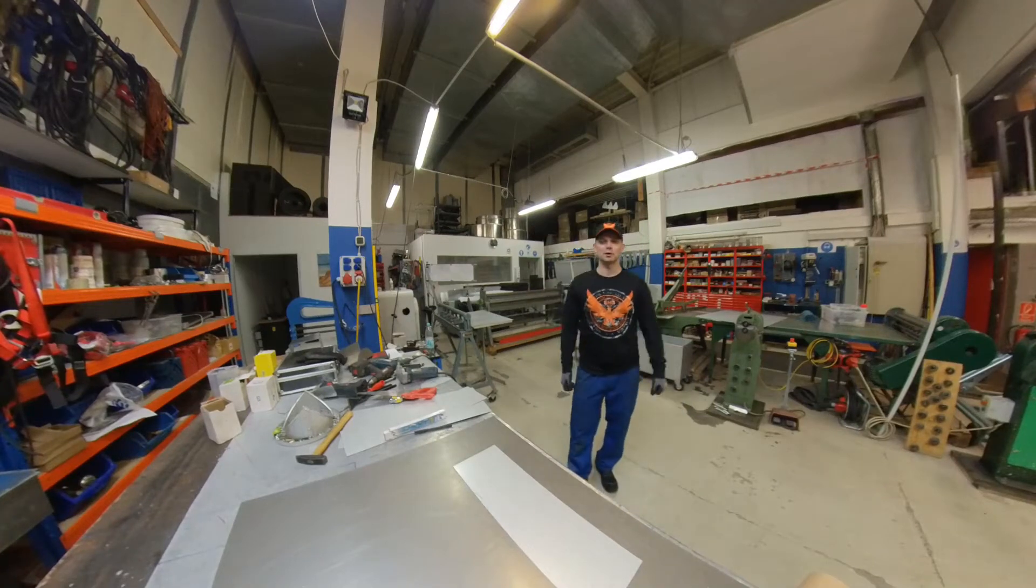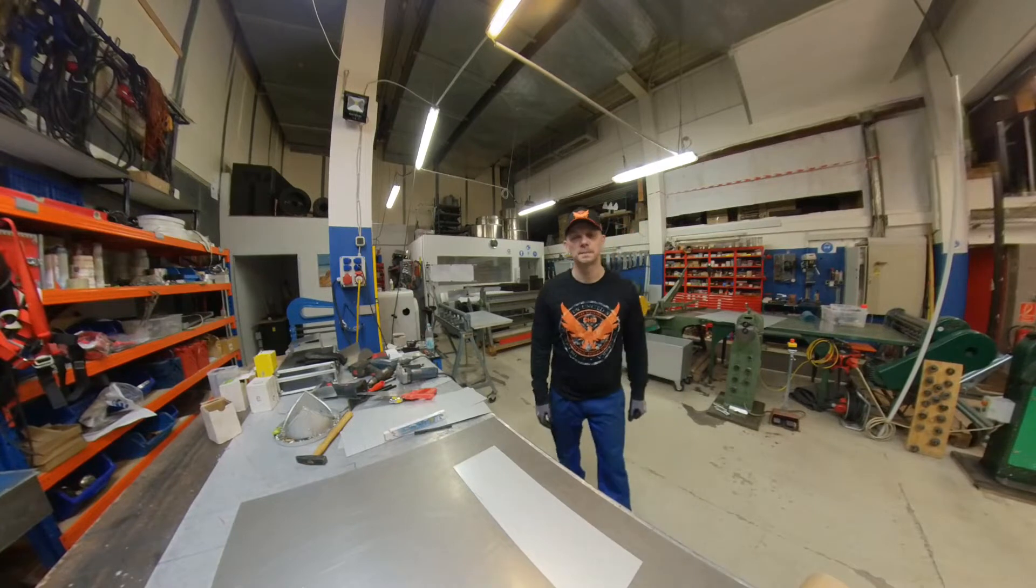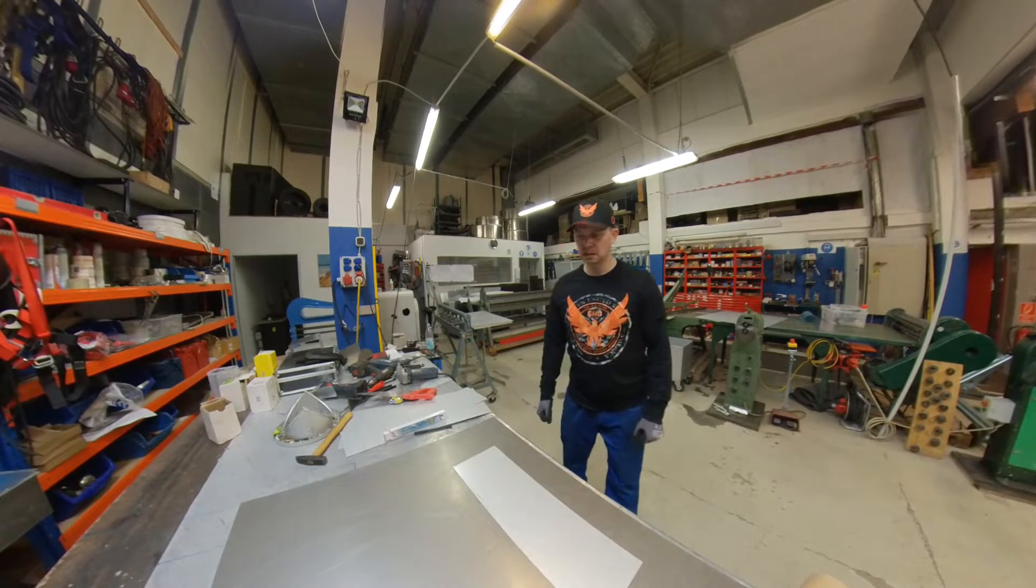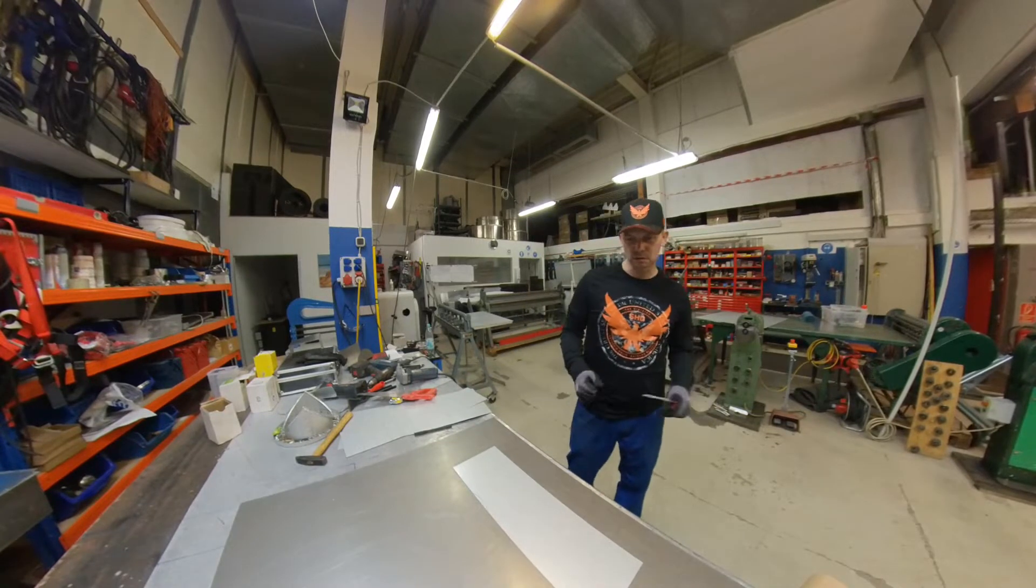Hello and welcome back again to the sheet metal workshop. Today we're going to do a video about an elbow two parts, like a miter cut, using also a ruler. I think this is also an old school method.